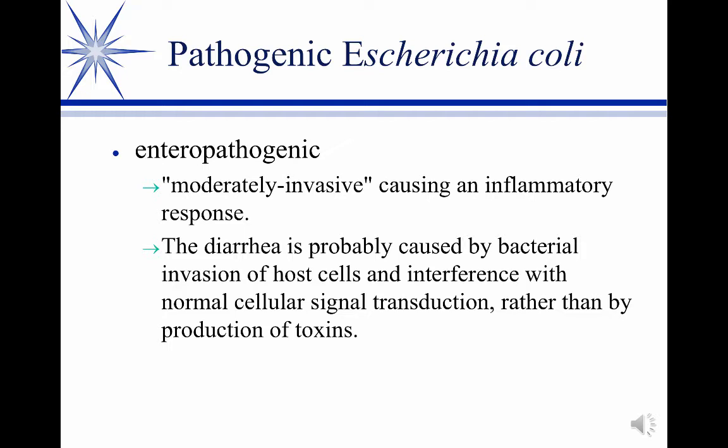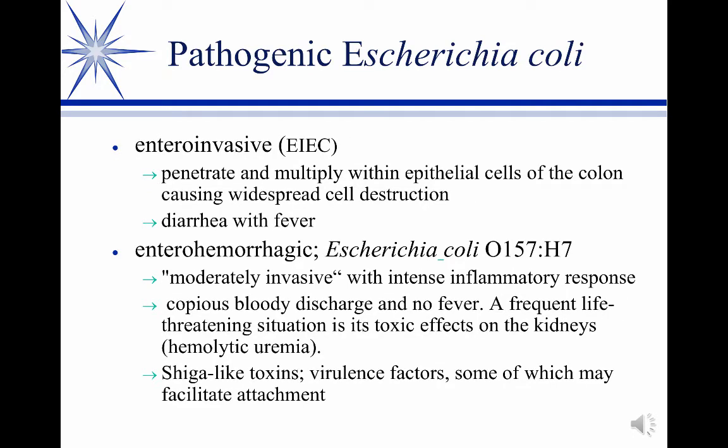The enteropathogenic is somewhat invasive and causes an inflammatory response and diarrhea. The enterohemorrhagic, again, is the one that gets the most press — it's moderately invasive, causes a pretty severe bloody diarrhea but no fever, and the toxins are thought to be involved. It often causes kidney damage or overt kidney failure. There's also vasculitis associated with it where humans will slough toes and fingers, so it's a pretty aggressive condition.